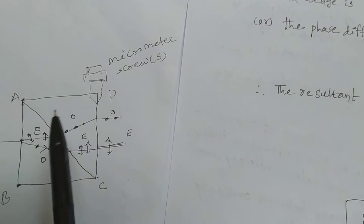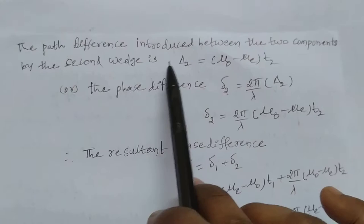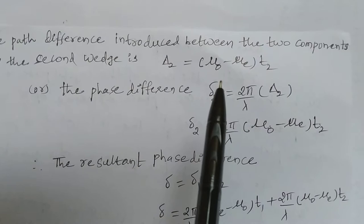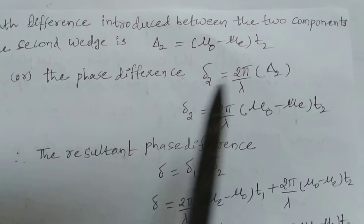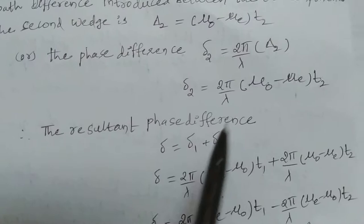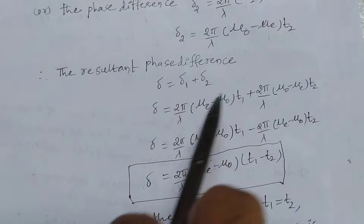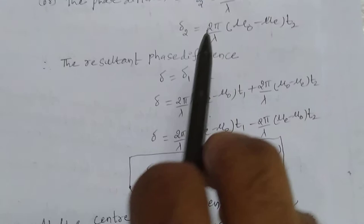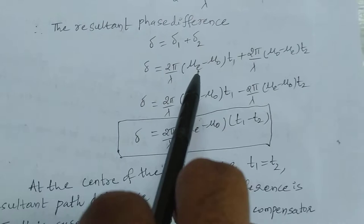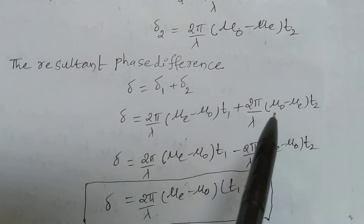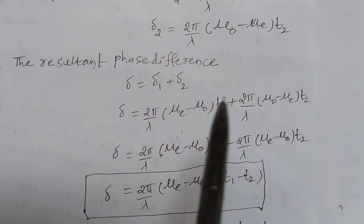Now, the path difference between the two components in the second wedge is: Δ2 = (μ_o − μ_e) × t2. The phase difference is: δ2 = (2π/λ) × (μ_o − μ_e) × t2. Taking the common factor, the resultant phase difference is: δ = (2π/λ) × (μ_e − μ_o) × t1 − (2π/λ) × (μ_e − μ_o) × t2, which simplifies to δ = (2π/λ) × (μ_e − μ_o) × (t1 − t2).